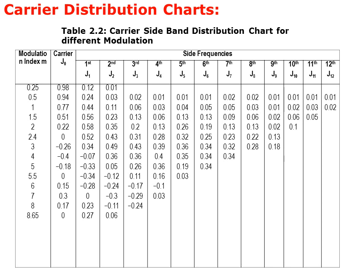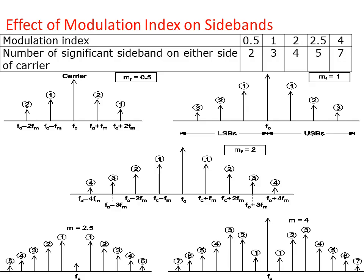Looking at the sideband distribution chart for different modulations, we have different modulation index values and correspondingly different sidebands. We can find out the sideband distribution from this table. Different diagrams show the modulation index and the spectrum of signals for different sideband configurations.